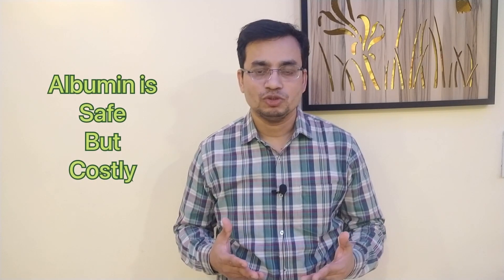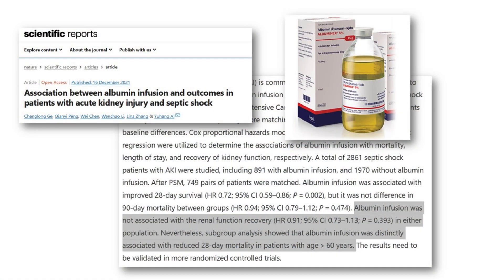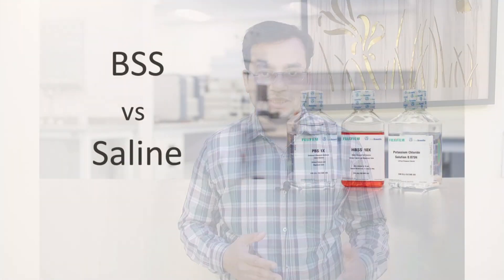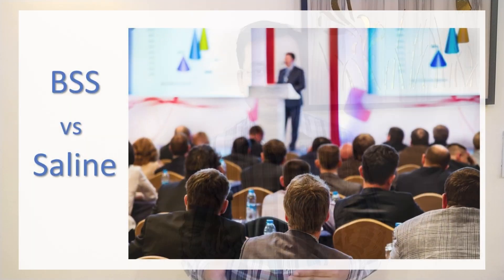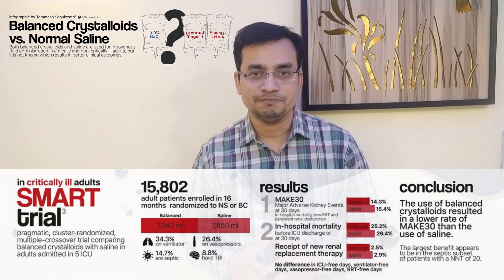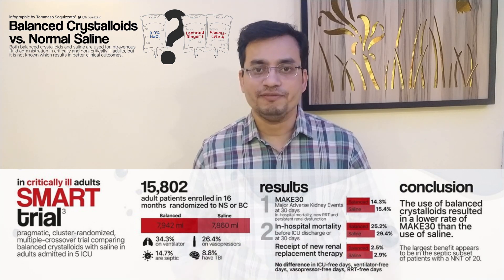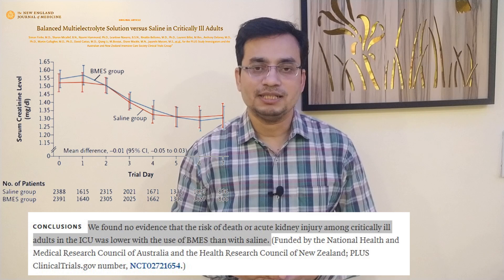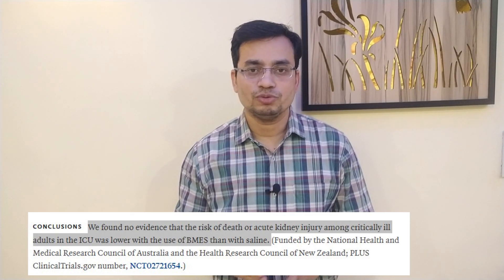But the problem with albumin is the cost, and moreover it does not improve survival. Therefore, it is suggested not to be used routinely. There is also a dilemma: which crystalloid is better — buffered solution or saline? The answer is still difficult to give as it remains a hot topic in critical care conferences. Excessive saline appears theoretically harmful due to chloride injury to kidney tubules. The SMART trial favored balanced salt solution over saline, but the recently published PLUS trial found no evidence that risk of death or AKI was lower with balanced multi-electrolyte solution versus saline. There is no clear theoretical benefit of balanced salt solution over saline.